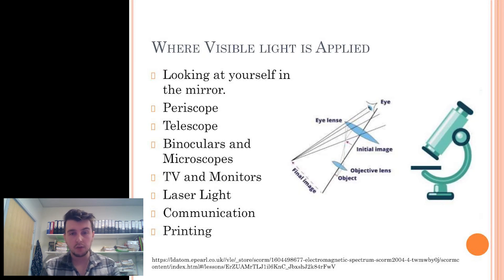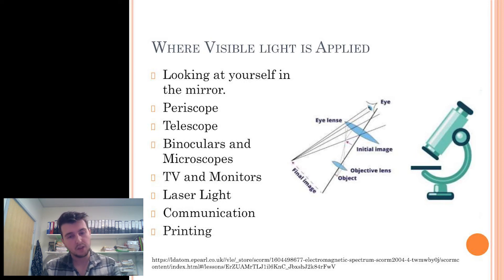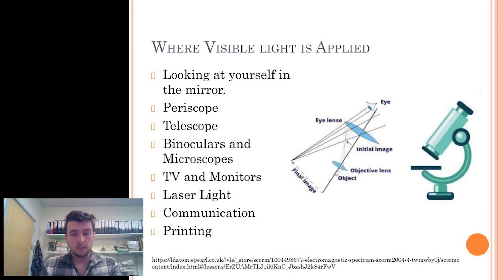Visible light has many uses, such as periscopes, telescopes and binoculars. These all use visible light by refracting off mirrors at specific angles or using lens sensors to magnify the effects of light. CSI investigators use microscopes to view samples collected at the scene — with increased magnification, the investigator can see things the human eye cannot and compare items such as hair samples to confirm identity. Other uses for visible light include TV monitors, laser light, communication and printing. Laser light has multiple uses, including curing medical conditions such as kidney stones or to cut a patient open to operate on.